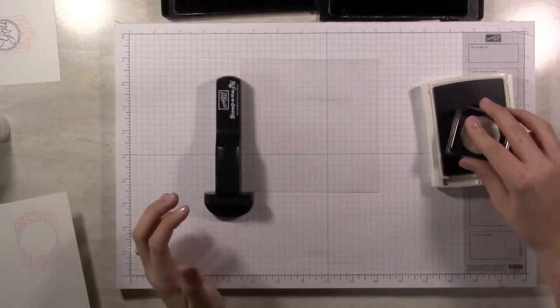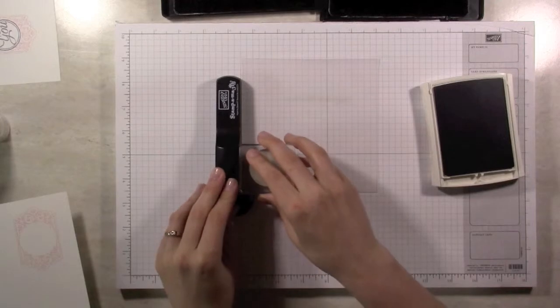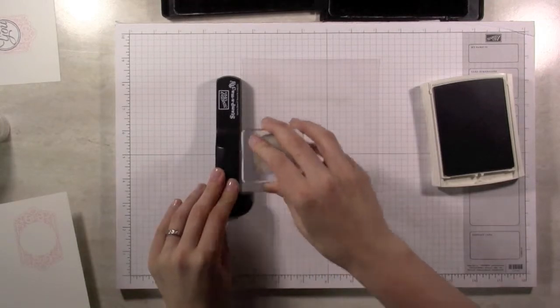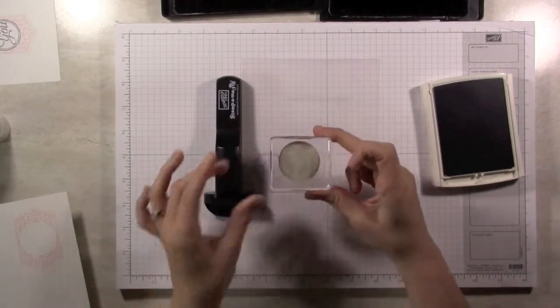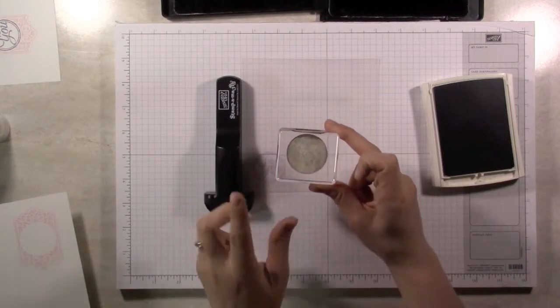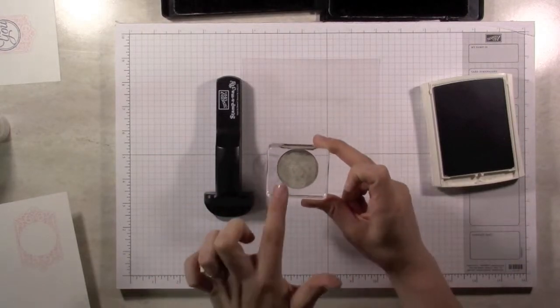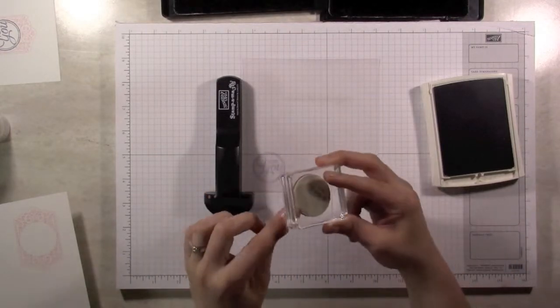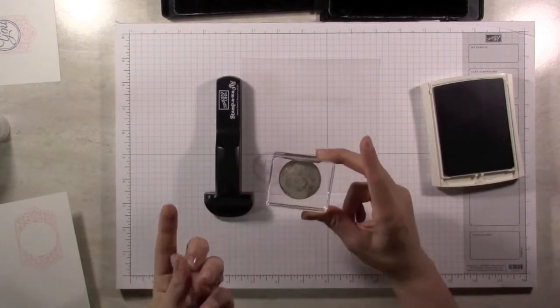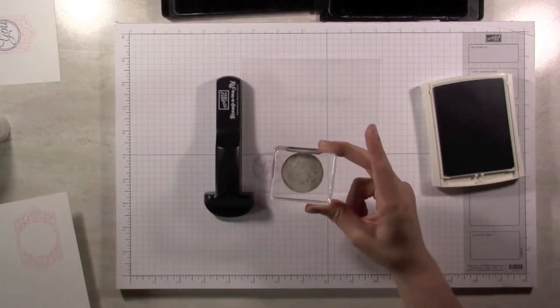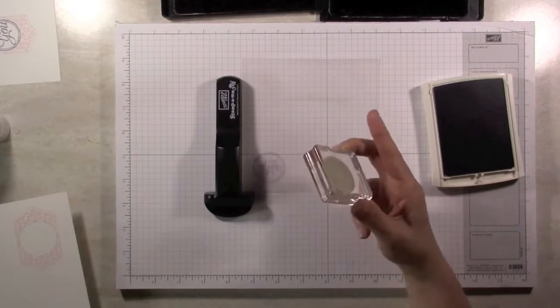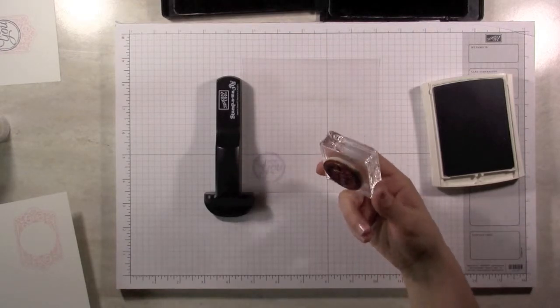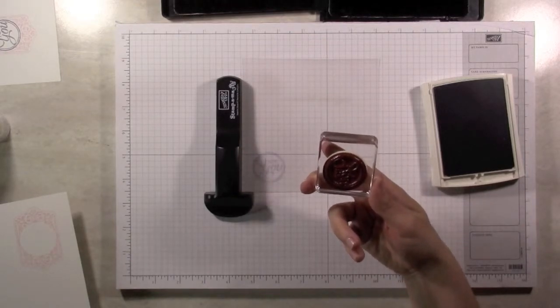So I've got my For You and I am going to stamp this down. One thing I'll tell you at this time some of you may be wondering, Stampin' Majig does provide clear stickers for the backs of these stamps. You can see your image a little bit better. I don't like those. I just feel like my stamps don't stick to my blocks quite as well when I use them.